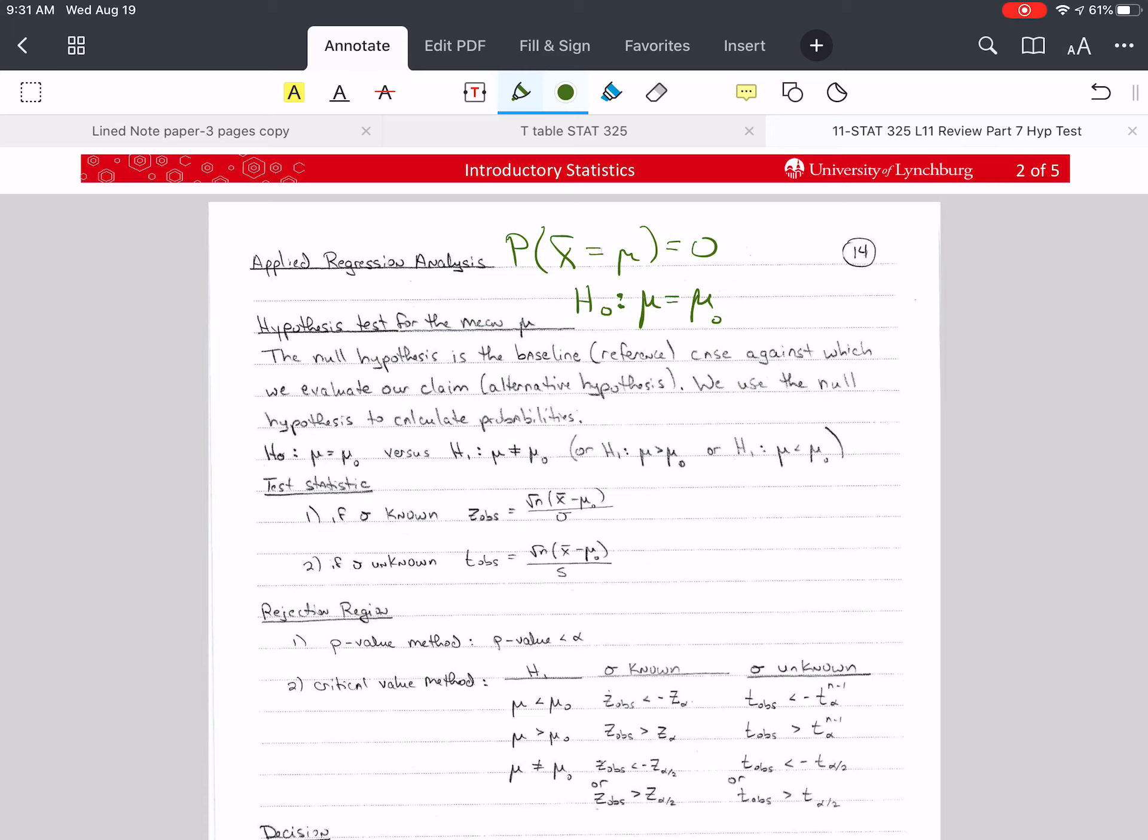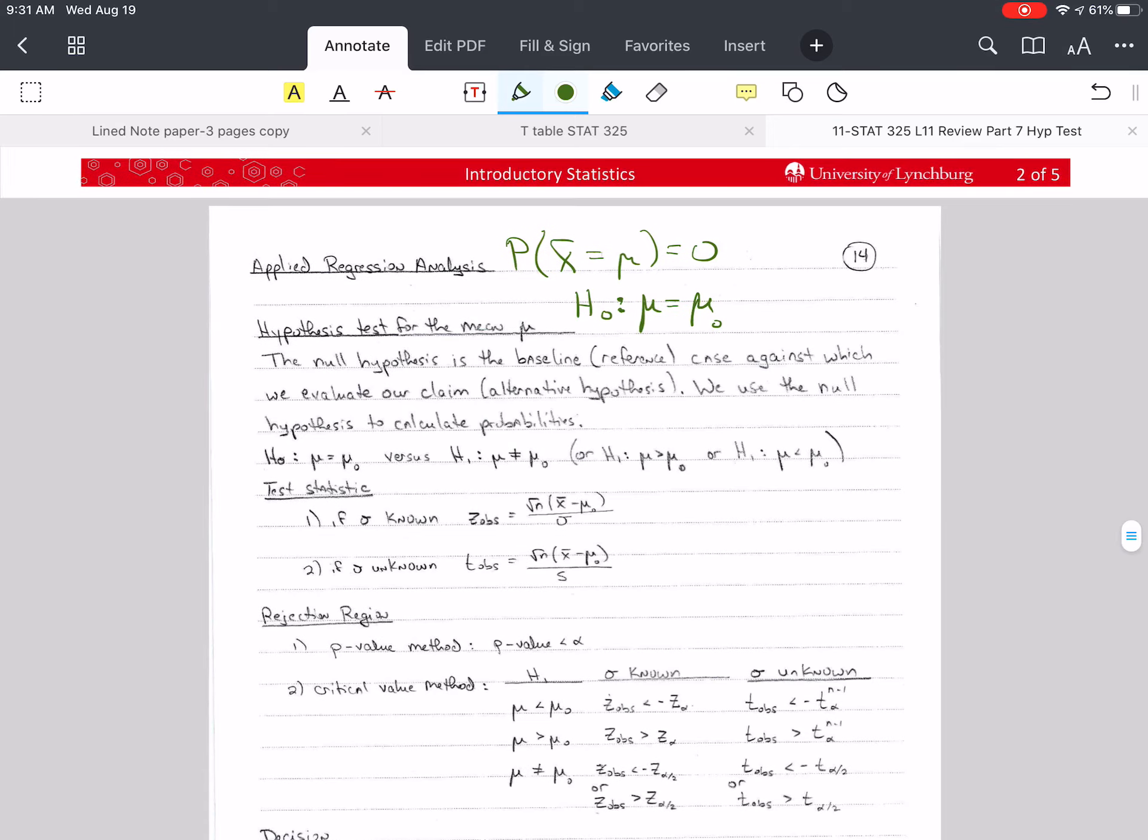Because it's an equal sign. So this is our null hypothesis, and the equal sign is always over here. Versus the alternative hypothesis, and this is what we want to know is true or not. Let's say greater than mu naught, and we've got three choices. We've got not equals to, we've got greater than, and we have less than some value mu naught.